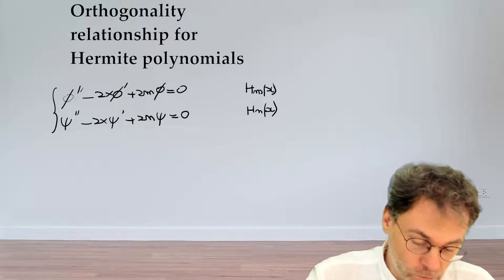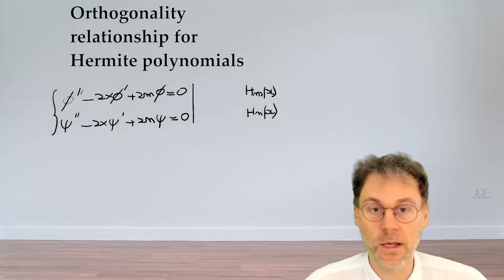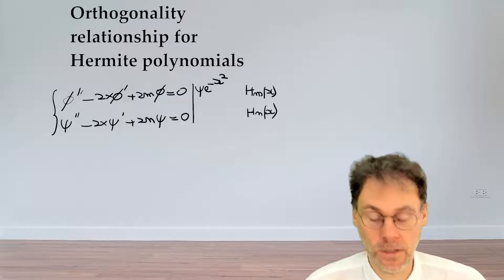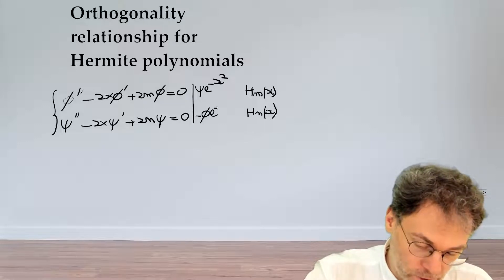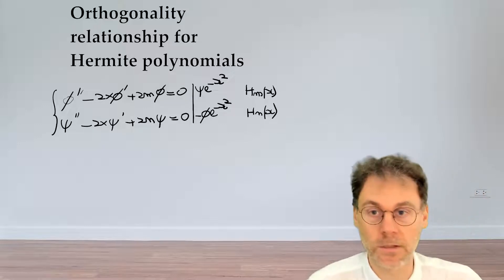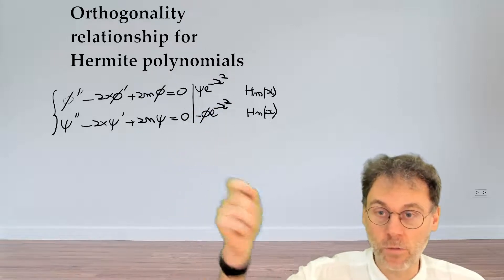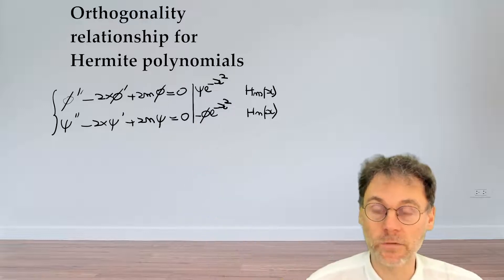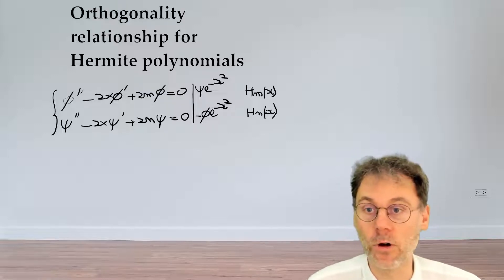What we're going to do is take the first equation and multiply it by ψ · e^(−x²), and the second equation by −φ · e^(−x²). The effect of these particular factors will become clear later on — there is a way to derive these factors by looking at the differential equation, but we're not going to go into that now.